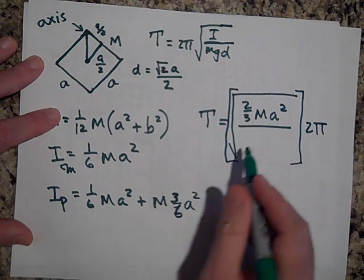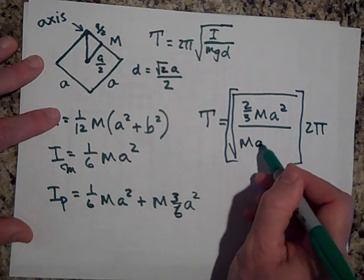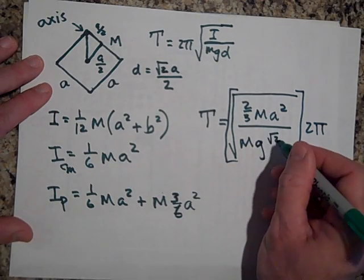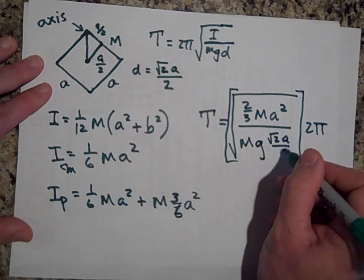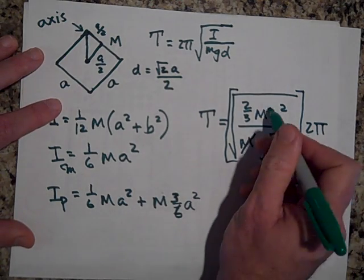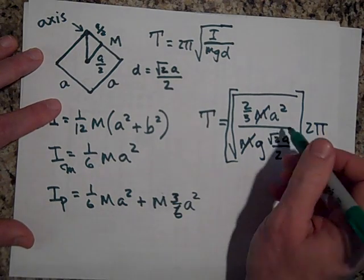Times two pi. And then what goes underneath here is m times g. Now d is going to be the square root of two times a over two. So that simplifies and get rid of an m and so on. You can get rid of one of the a's, and so that simplifies.